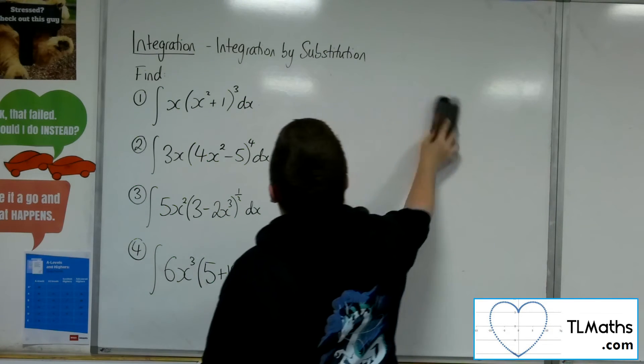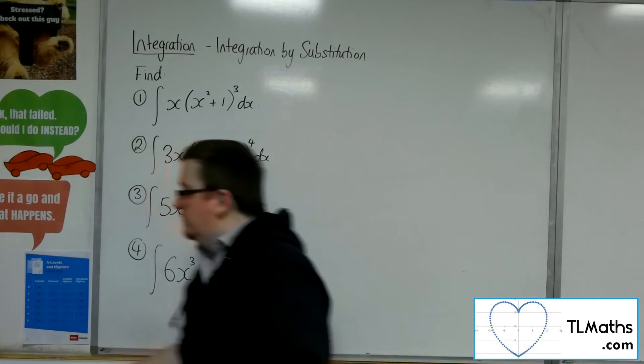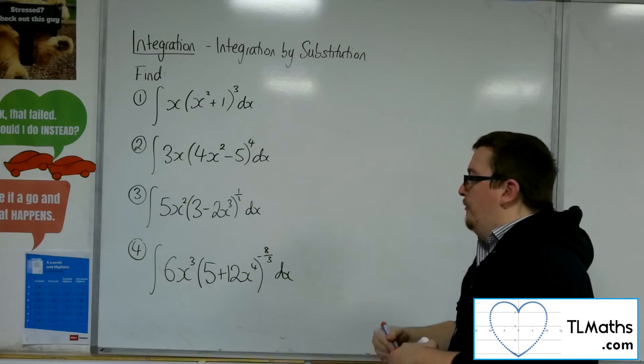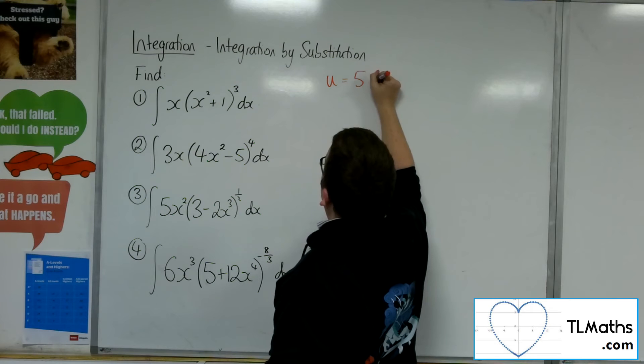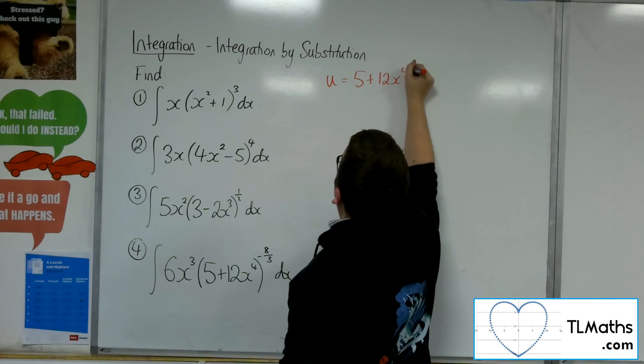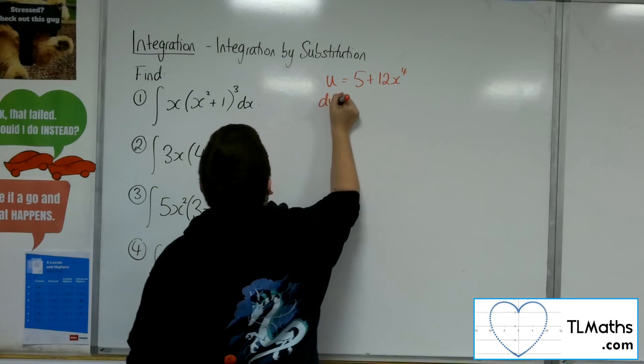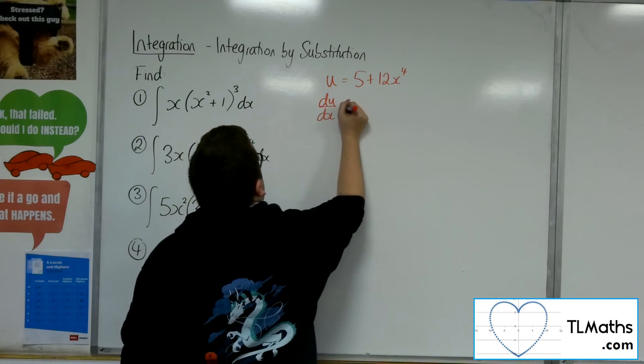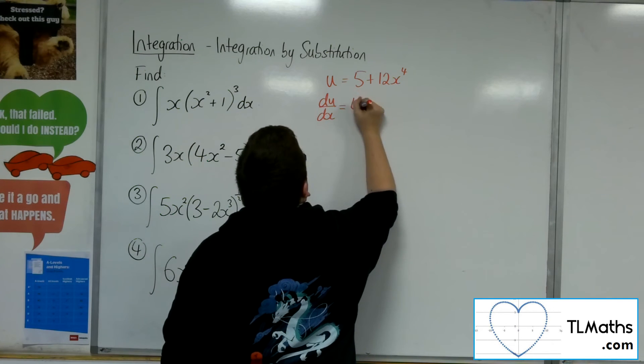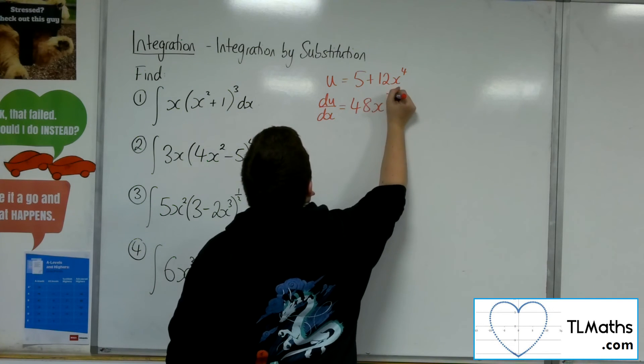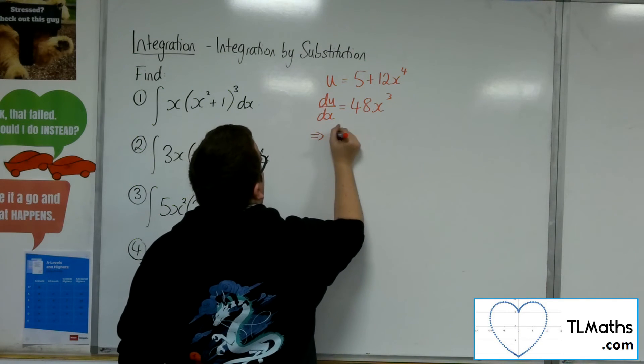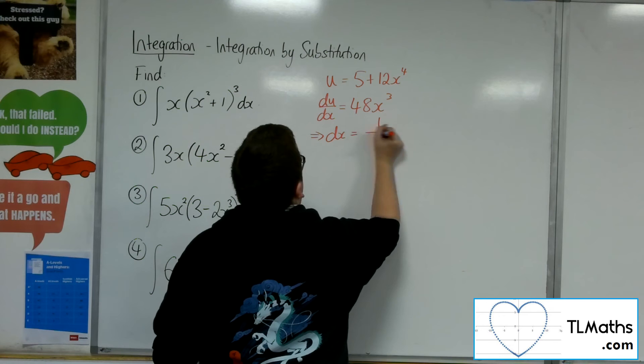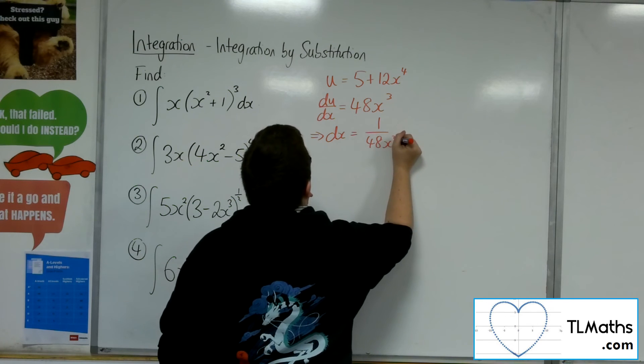Last one, number 4. We've got the u as 5 plus 12x to the 4. We want to differentiate that. du by dx is equal to 48x cubed. So rearranging, dx will be 1 over 48x cubed du.